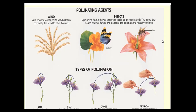Insect pollination is called entomophile, where insects carry out pollination. The types of pollination include self-pollination, where the same plant's pollen grains from the anther are transferred to the stigma of the same flower. That is self-pollination — the same pollen grains go to the same flower's stigma.